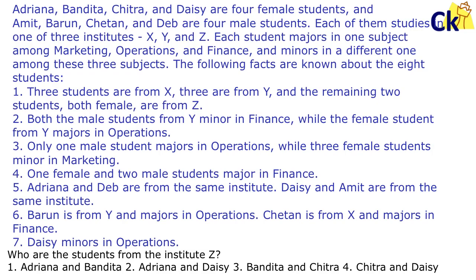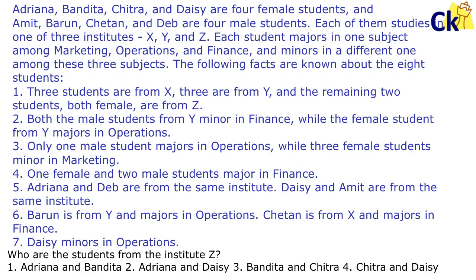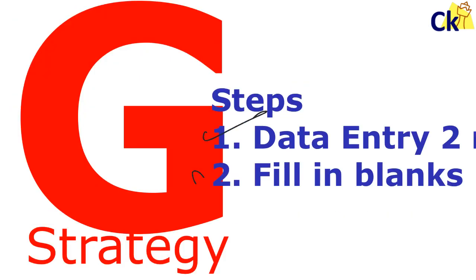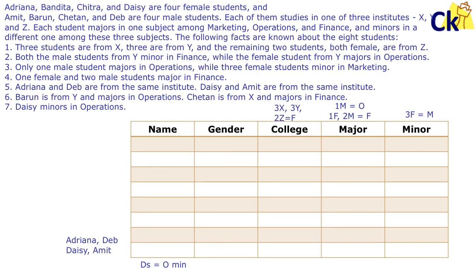This is not an easy question. There are eight people; their gender — male or female — their major and minor subjects all have to be tracked. You can pause the video and try to solve it. Step one is data entry, step two is fill the blanks. Let's start with step one: data entry.